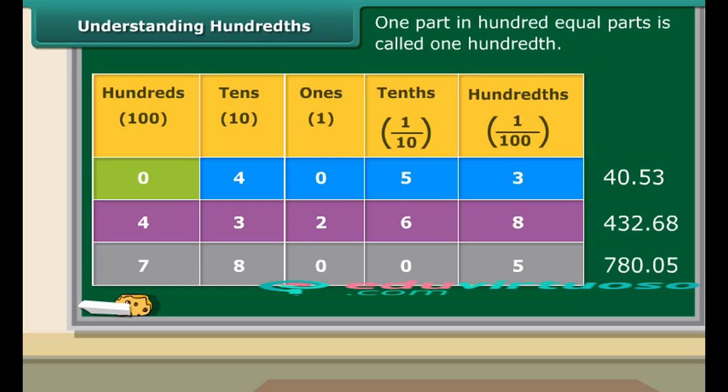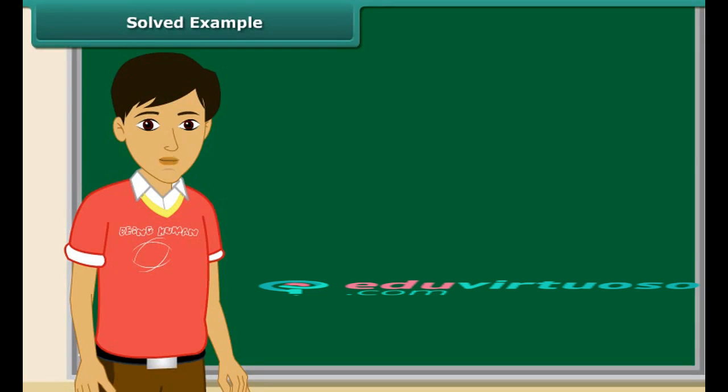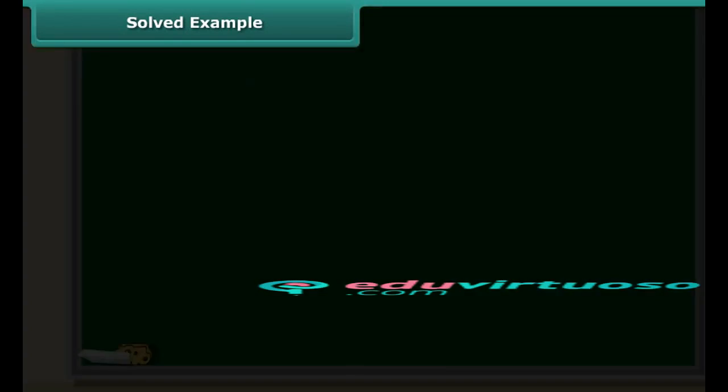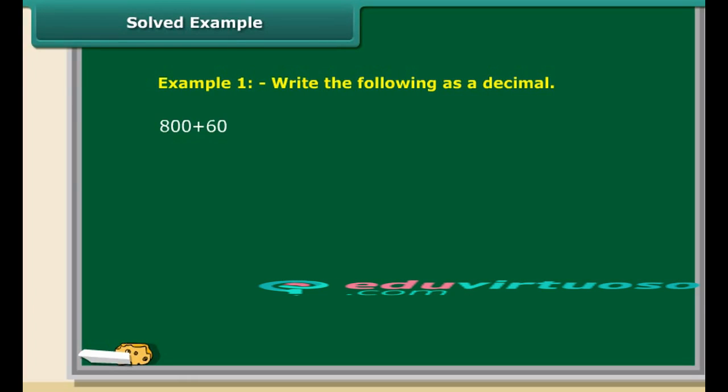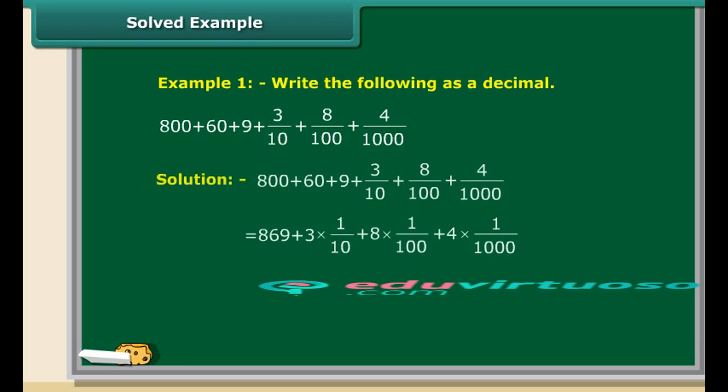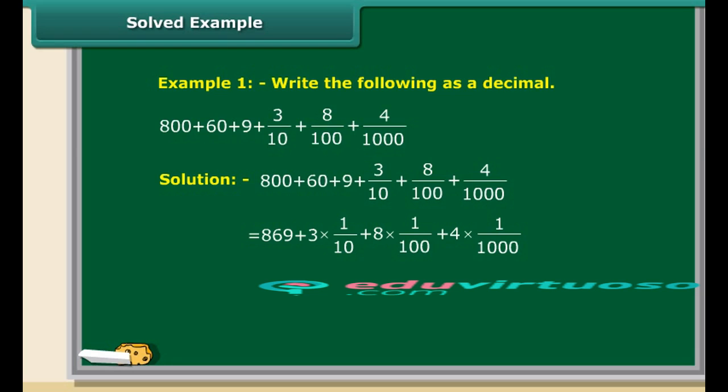We can extend the place value table further from hundreds to thousands. Let us test our understanding by solving some questions. Write 800 plus 60 plus 9 plus 3 tenths plus 8 hundredths plus 4 thousandths as a decimal. 800 plus 60 plus 9 is 869. 3 tenths plus 8 hundredths plus 4 thousandths is 0.3 plus 0.08 plus 0.004, which adds up to 0.384. So the answer is 869.384.